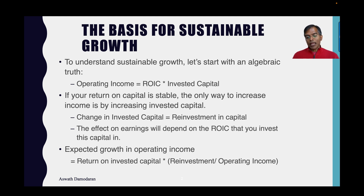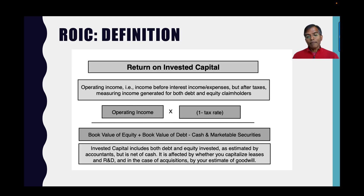20% times 40% gives you an expected growth of 8%. That is what I'm trying to report in this data set. But it works only if you have companies with stable returns on invested capital.